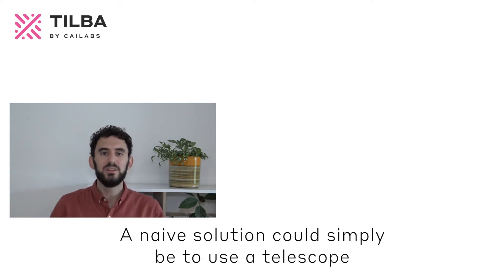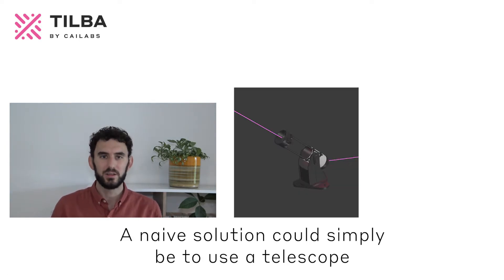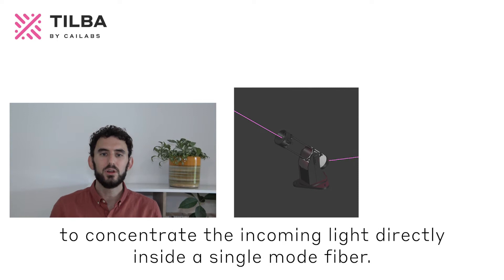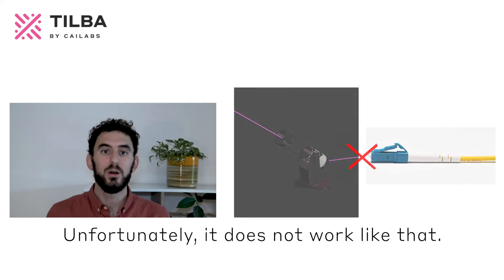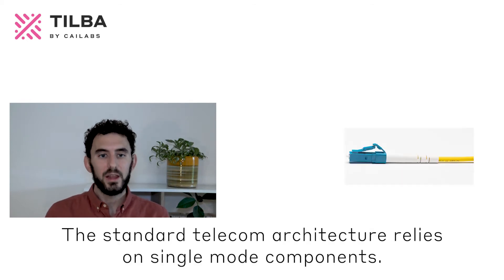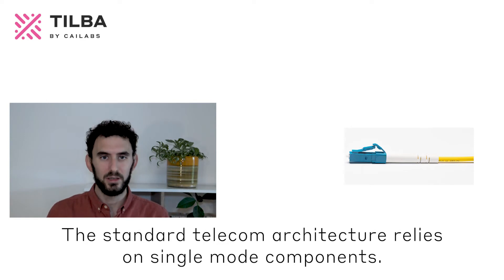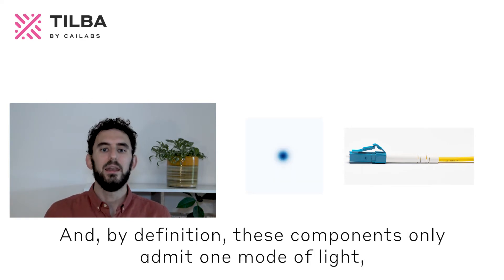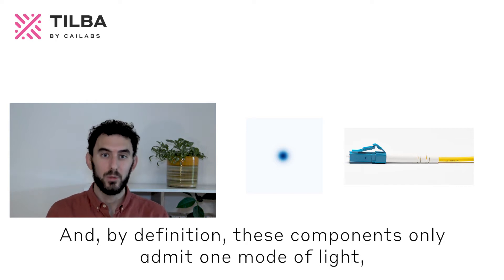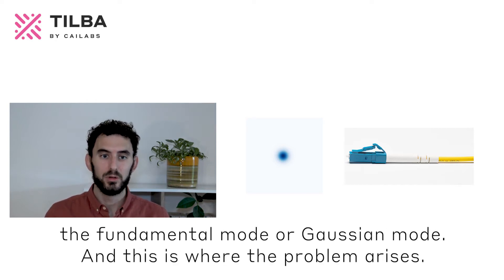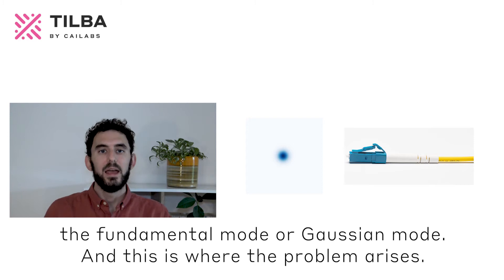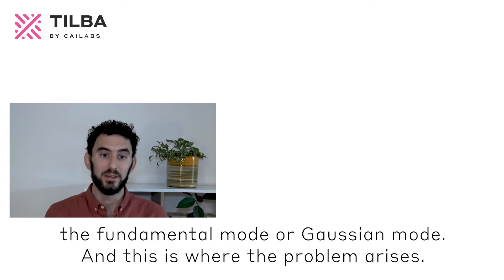A naive solution could simply be to use a telescope to concentrate the incoming light directly inside a single-mode fiber. Unfortunately, it does not work like that. The standard telecom architecture relies on single-mode components, and by definition, these components only admit one mode of light — the fundamental mode or Gaussian mode. And this is where the problem arises.